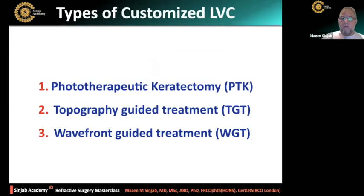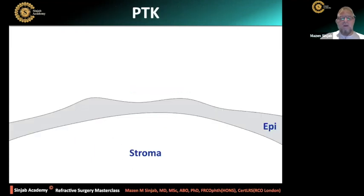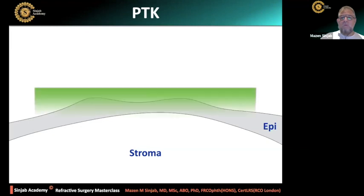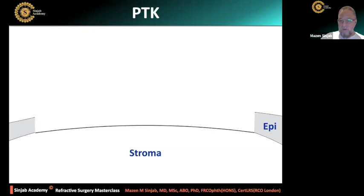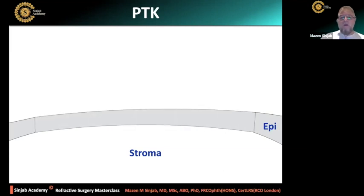We go back to the types of customized laser vision correction: PTK, topography-guided treatment, wavefront-guided treatment. Starting with PTK — in PTK, we have irregular stroma and irregular epithelium, and we want to ablate in order to create a smooth surface on the stroma, and leave the job to the epithelium to cover it with a smooth layer of epithelium. That's it — the irregularity is gone. This is the principle of PTK.